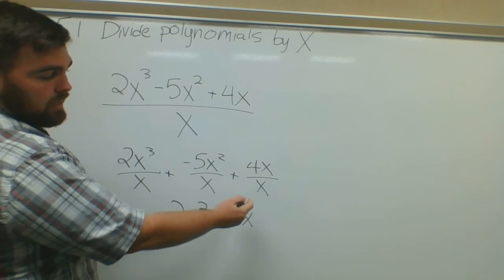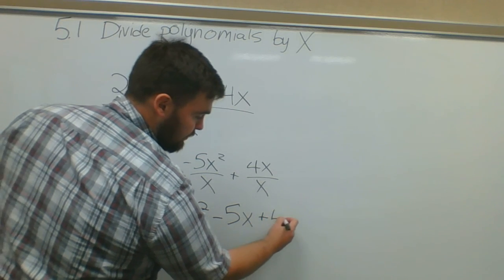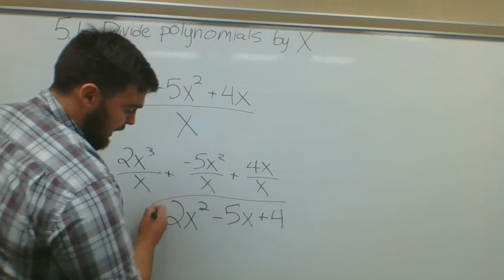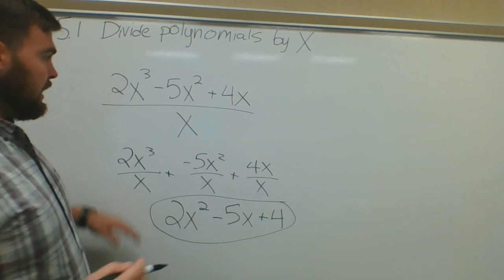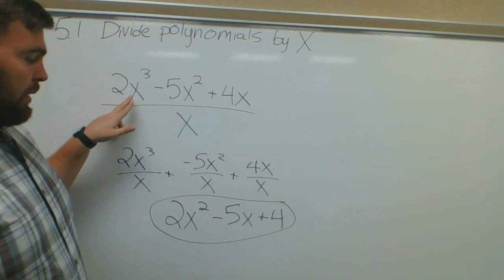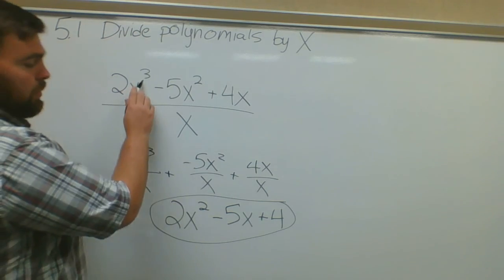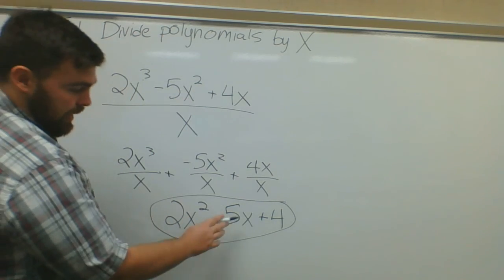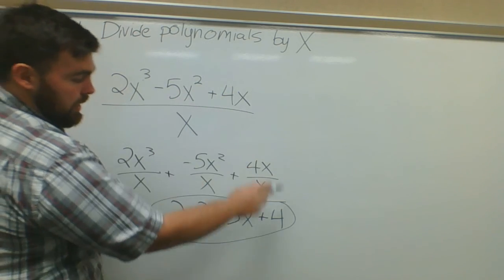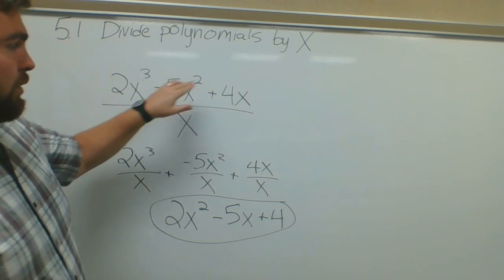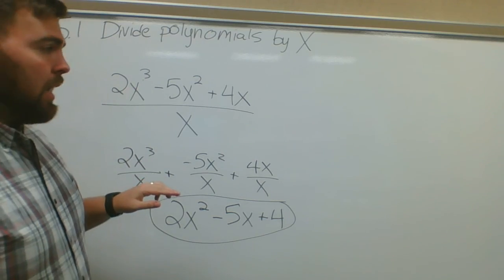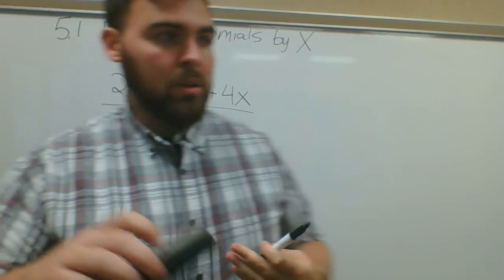Okay, this is my answer. One thing you'll notice is if you just look up here, the only thing that's different: this was 3, now it's 2; this was 2, now it's 1; this was 1, now it's 0, there's no variable there anymore. So all you're doing is subtracting 1x from each term. As long as you get that concept down, you'll be able to do any of these problems.